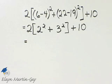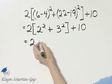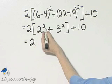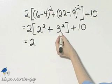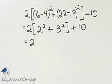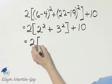Now look again. I still have to work within my set of brackets so I have 2 times. Then within that I will square 2 and square 3 and then add those two numbers. So there's my bracket.